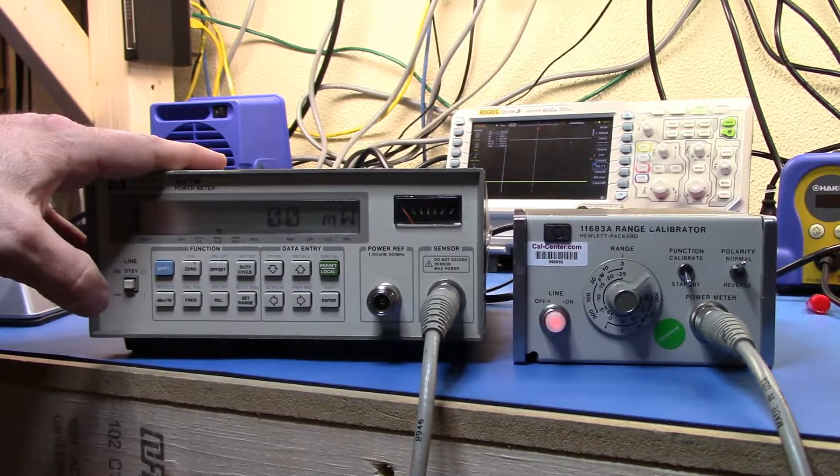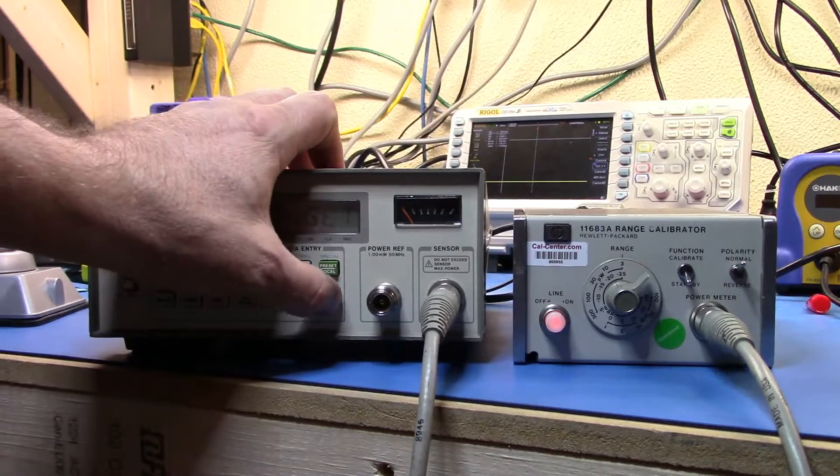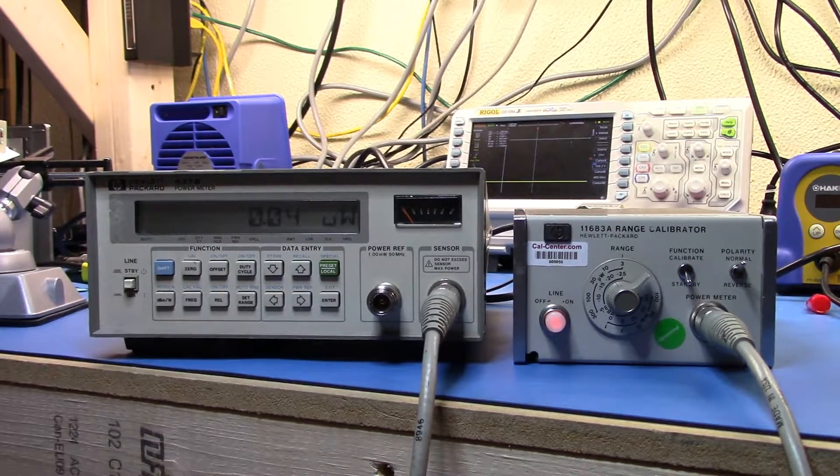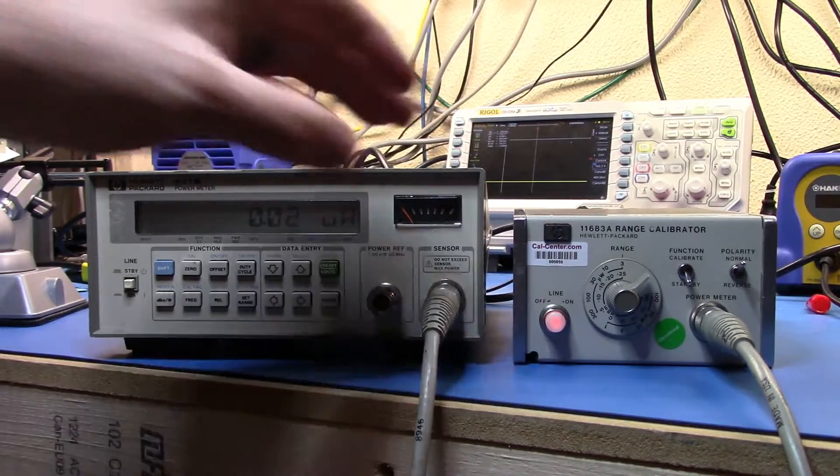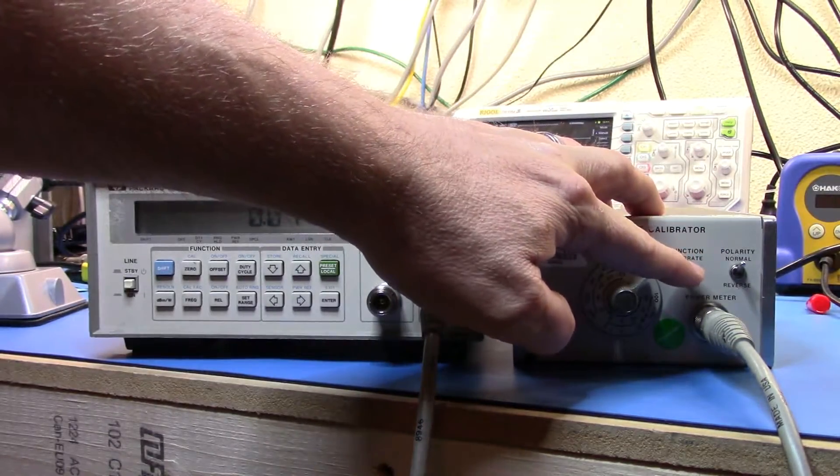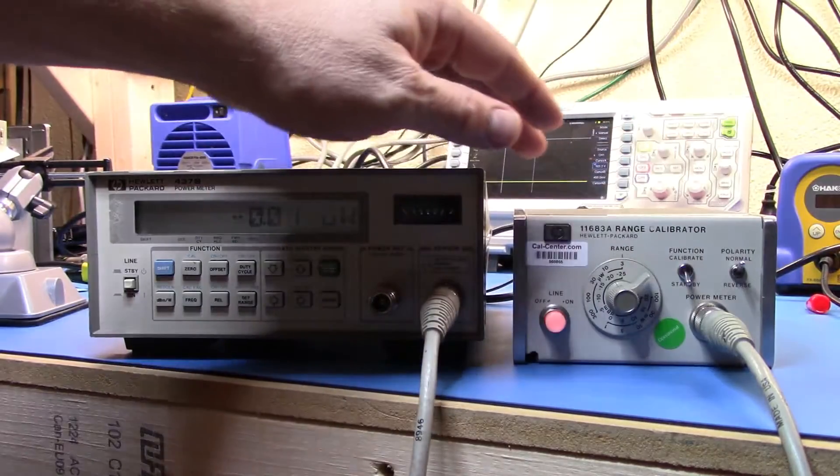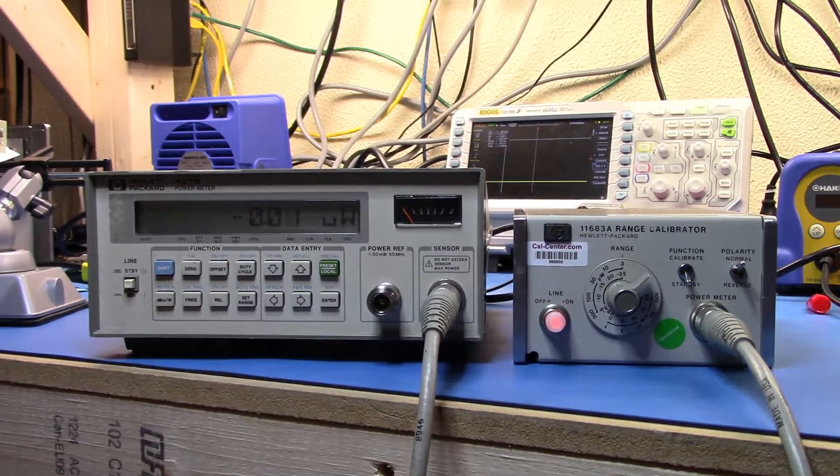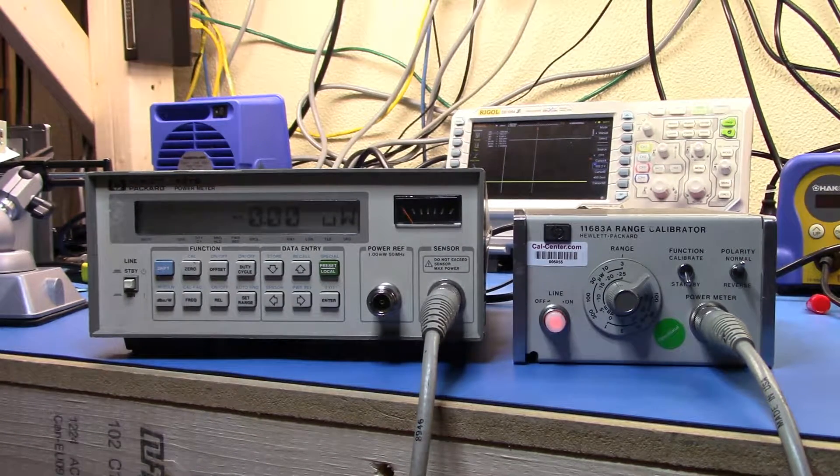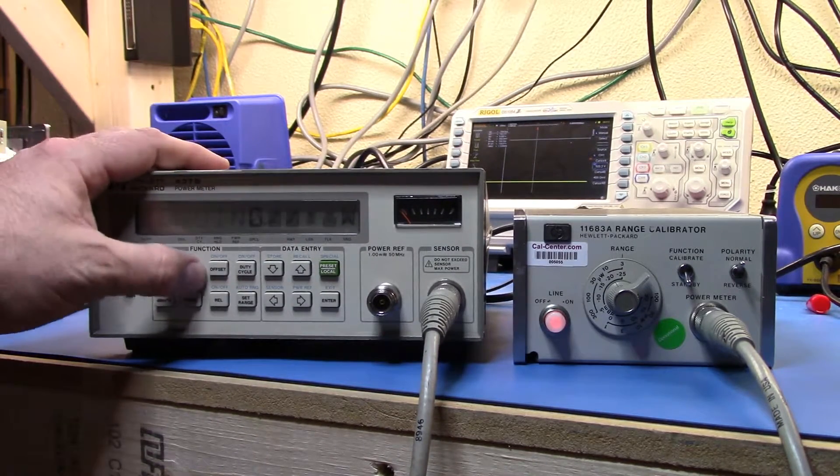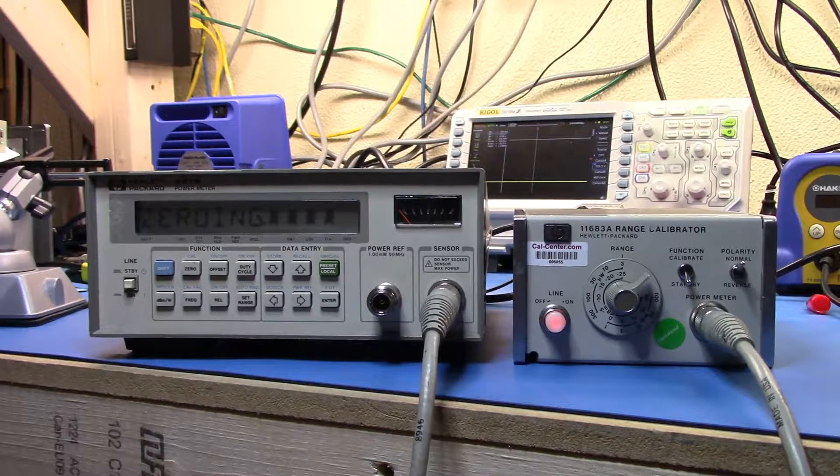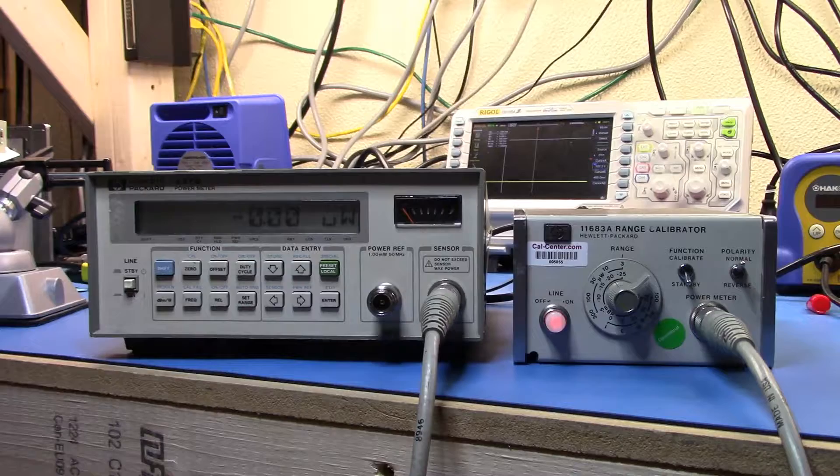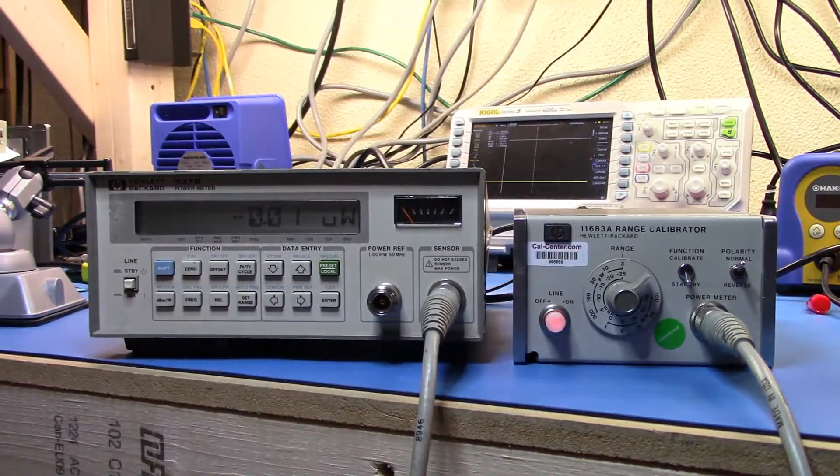So we have the meter turned on, we set preset local, we set dB milliwatts, range function is going to be standby, polarity is normal, range is 3 microwatts, line is on, press the power meter zero function.